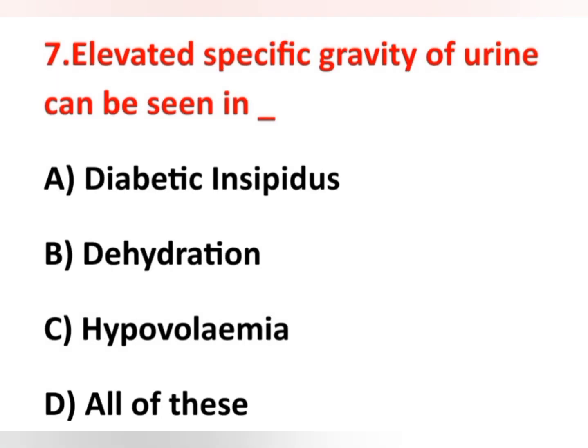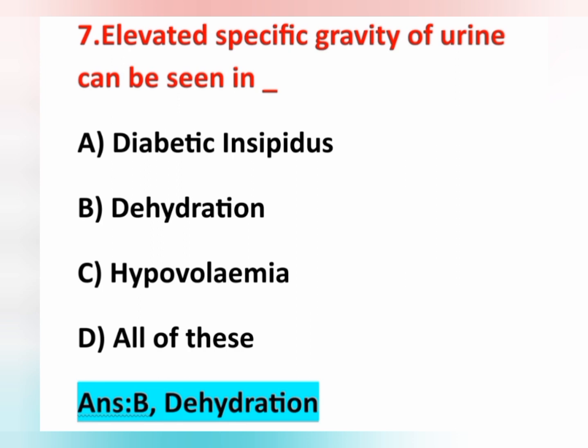Seventh question: Elevated specific gravity of urine can be seen in — option A diabetes insipidus, option B dehydration, option C hypovolemia, option D all of these. The correct answer is option B — dehydration. Normal specific gravity of urine is 1.005 to 1.030. When specific gravity increases, urine output is decreased.